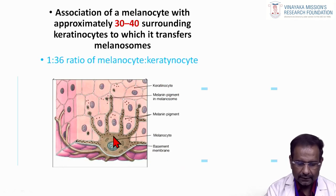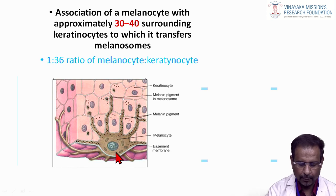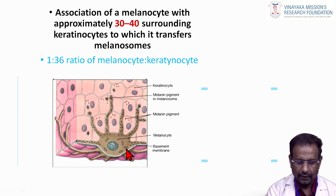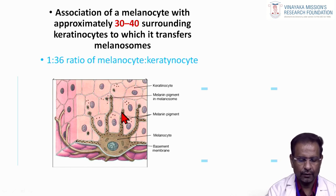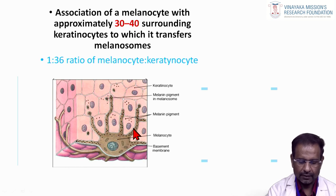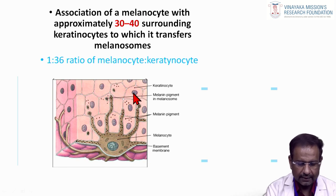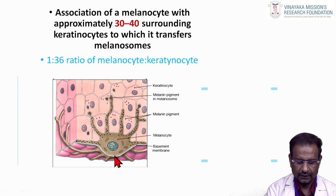Each melanocyte is embedded in the basement membrane and is connected to 30 to 40 surrounding keratinocytes. Once the melanin is produced in the nucleus, it is transferred to the superficial keratinocytes. The ratio of melanocytes to keratinocytes is 1:36. This picture explains the process in detail.